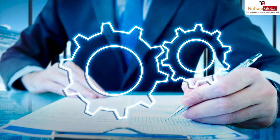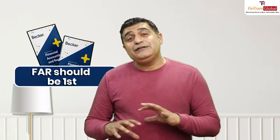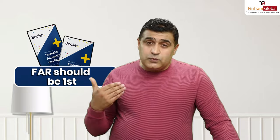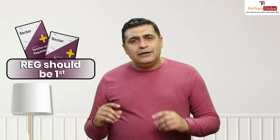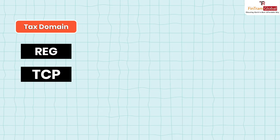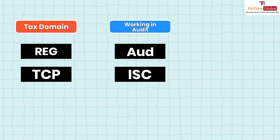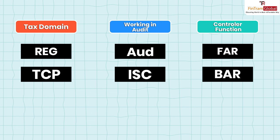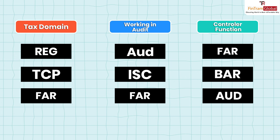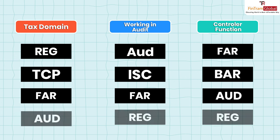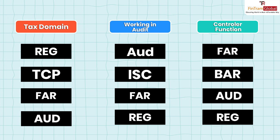For controllers completely into Financial Accounting and Reporting, FAR should be the first choice. For people coming from the tax domain, they should choose Regulation first. Then consider your interest area: if your interest is in tax, choose TCP as your discipline subject; if your interest is in audit, choose ISC; if your interest is in FAR, choose BAR. The third subject should then be Audit or FAR depending on what you chose, and the fourth should be Regulation.